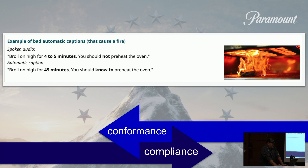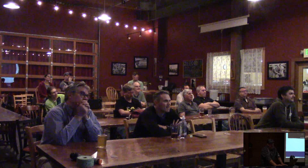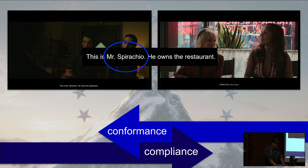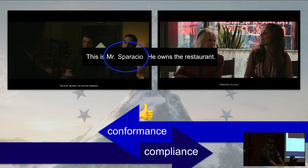Auto-generated captions are far from perfect. For example, the audio track says 'broil on high for four to five minutes, you should not preheat the oven,' while the transcription reads 'broil on high for 45 minutes, you should know to preheat the oven' — this resulted in a fire. Another example: in The Offer, a scene about The Godfather, the audio pronounces my name 'Mr. Sparaccio' but the AI spells it incorrectly. We fix these, and we're exploring whether users can flag and submit real-time caption corrections to the platform.